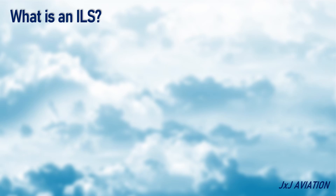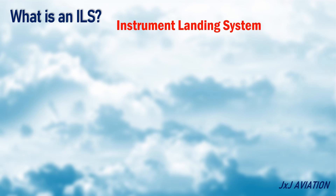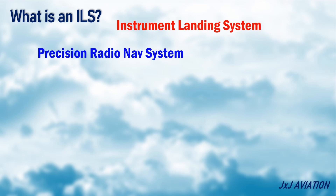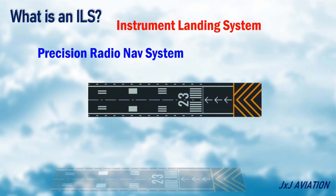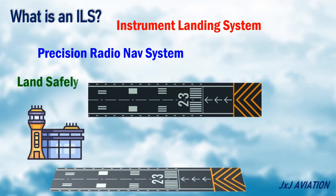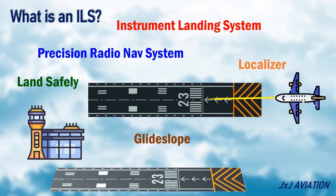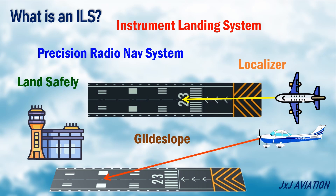ILS stands for Instrument Landing System. This is a precision radio navigation system which helps pilots land an aircraft safely. This system consists of a localizer and a glide slope. The localizer signals are used to keep the aircraft aligned on the runway's centerline, and the glide slope signals are used to keep the aircraft on the correct descent path.